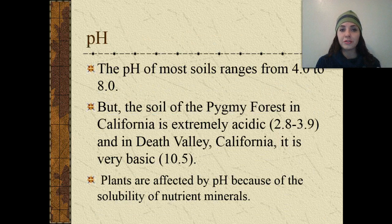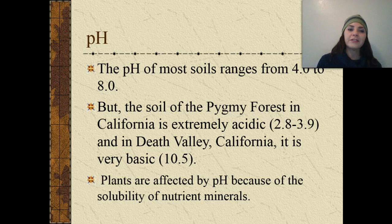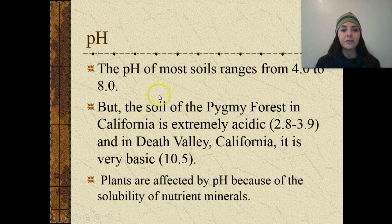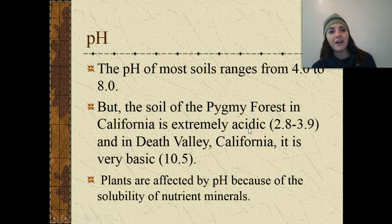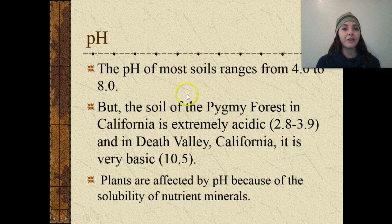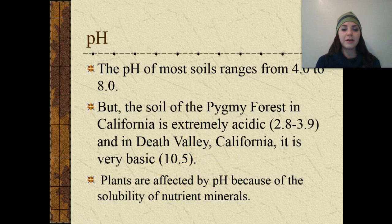pH is another property used to measure soil. The pH of most soils ranges from about 4.0 to 8.0 — from slightly acidic to slightly basic. However, extremes exist: the Pygmy Forest in California has extremely acidic soil with a pH of 2.8 to 3.9, while Death Valley has very basic soil with a pH of 10.5. Plants are affected by pH because of the solubility of nutrients and minerals they can uptake.